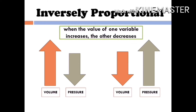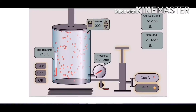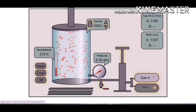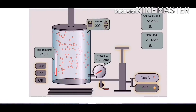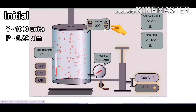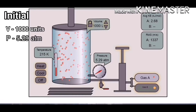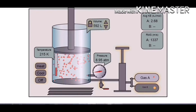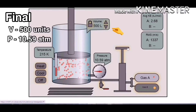Now, what if we decrease the volume by one half? Of course, we know that the pressure will increase. But the question is, by how much? Let us again investigate using this simulation. To determine how much pressure will increase if we reduce the volume by one half, let's have a fixed amount of gas in the container and keep the temperature constant. Initially, the volume occupied by gas molecules is 1,000 units with a pressure of 5.29 atmospheres. Let's now reduce the volume by one half — that is, from 1,000 units to 500 units of volume — and observe what happens to pressure.